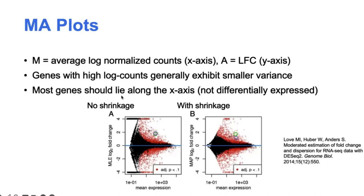This MA plot comes from the DESeq2 paper. On the left is what the MA plot looks like without any shrinkage applied to the log-fold change estimates, but on the right, after shrinkage is applied, you can see all those genes with high variance and low counts were either filtered out or pushed towards zero — producing a change in the shape of the MA plot. This is a good way to check whether shrinkage was applied and what it did to your data. In the notebook we'll go through later, we'll demo both this plot and the volcano plot.